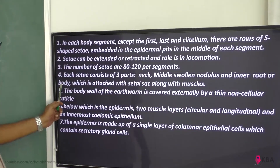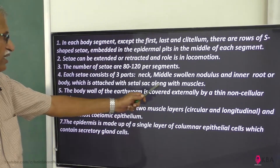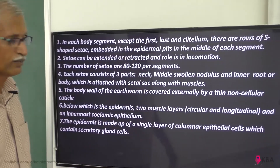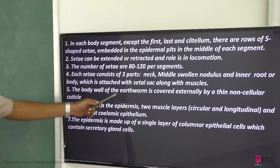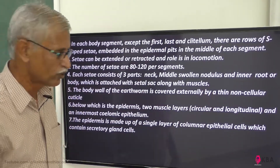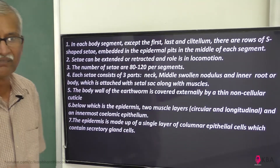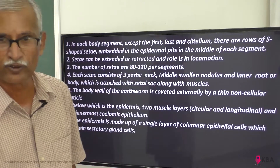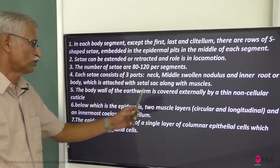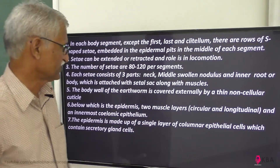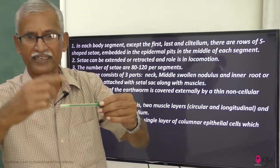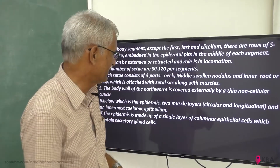The body of the earthworm is covered externally by a thin, non-cellular cuticle. In the cuticle there is a wax coating — it is a non-cellular coating. Below which is the epidermis, and there are two muscle layers: one circular and one longitudinal. That is the dermis.